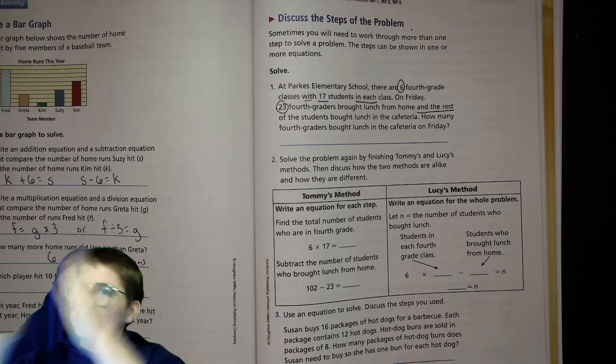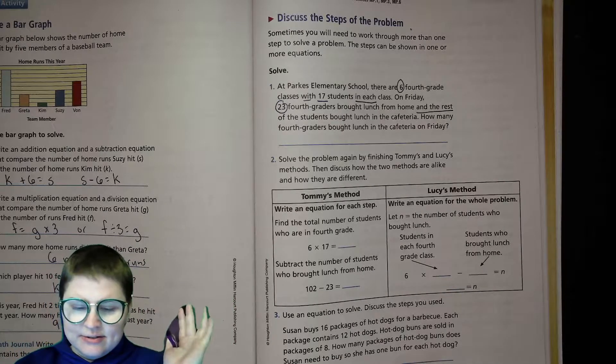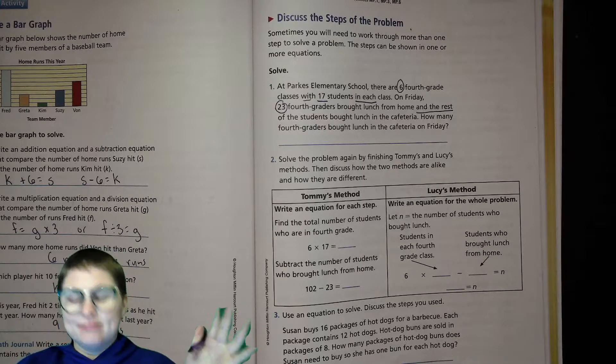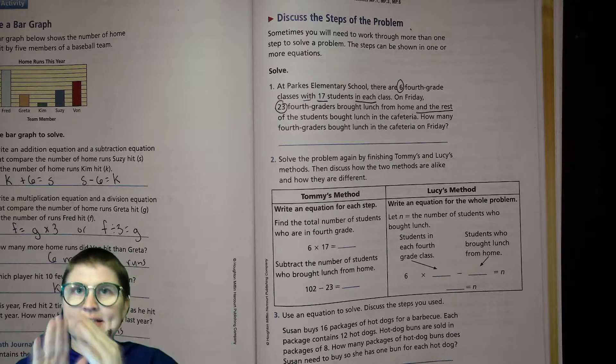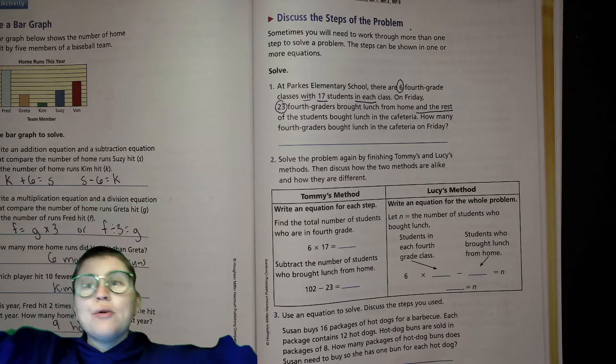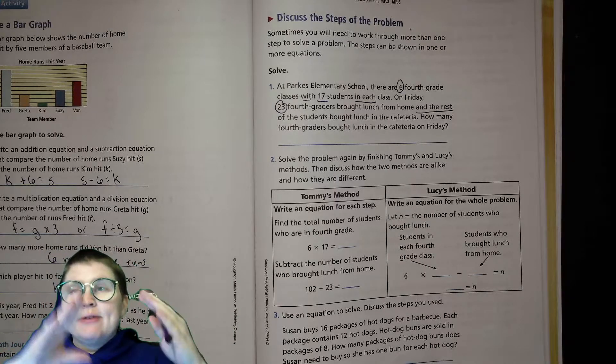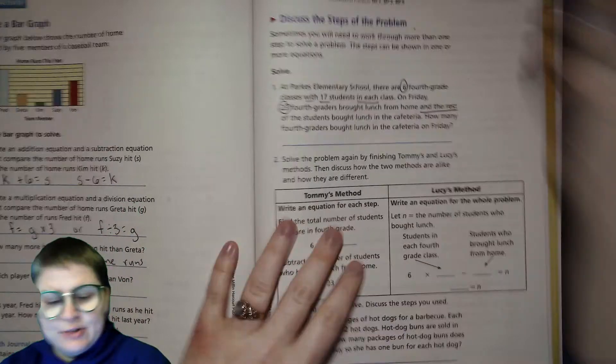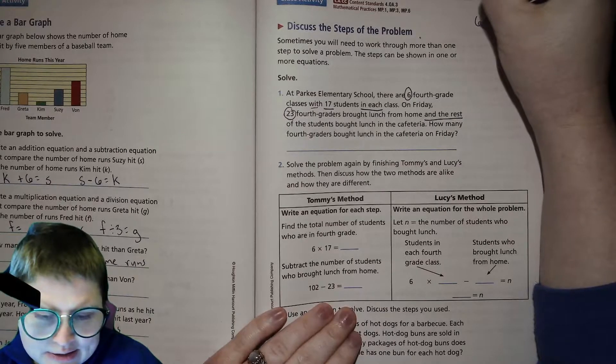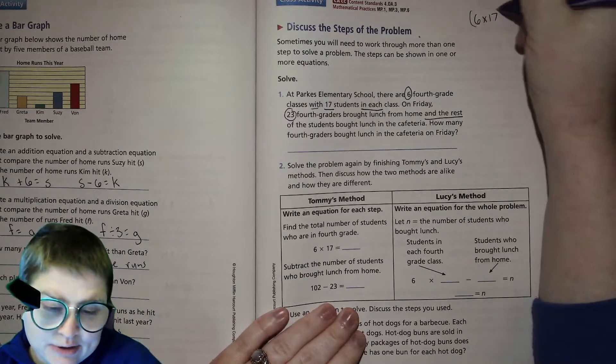So imagine six classrooms each have 17 students. So that's like six times 17, right? That's the total number of fourth graders. Then you make a math mountain, you have your total now, which is your six times 17, right? That's your total parentheses around that.